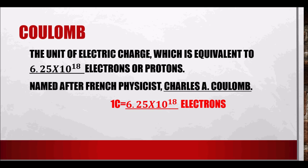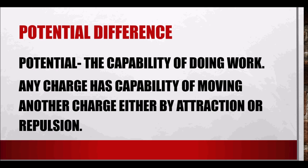The unit of charge is the coulomb, which is equivalent to 6.25 × 10¹⁸ electrons or protons. The unit is named after French physicist Charles-Augustin de Coulomb. One coulomb is equal to 6.25 × 10¹⁸ electrons — this is a very important equivalent.